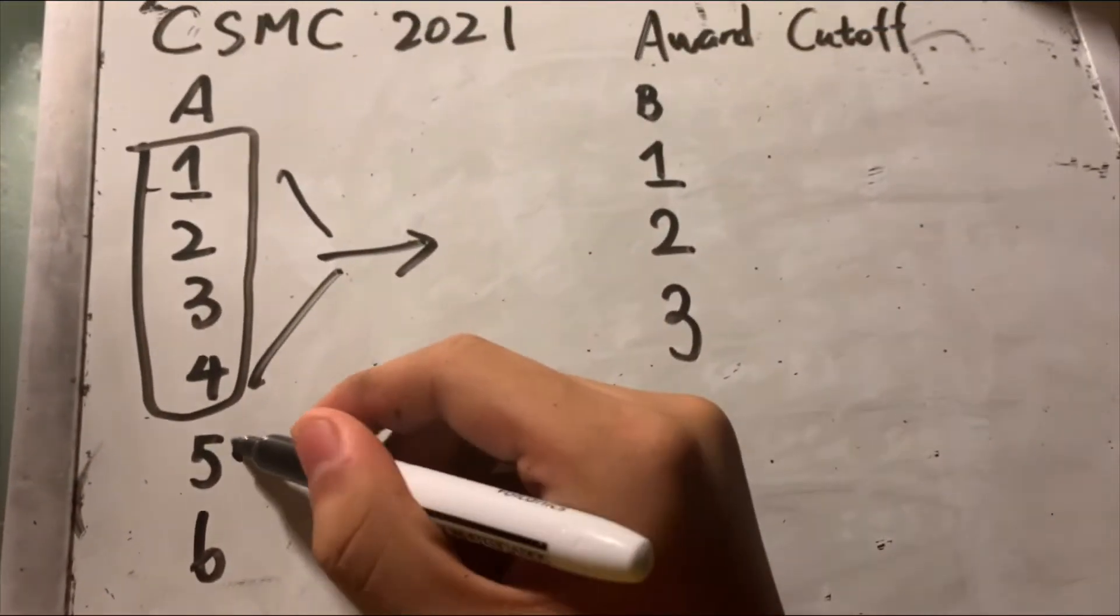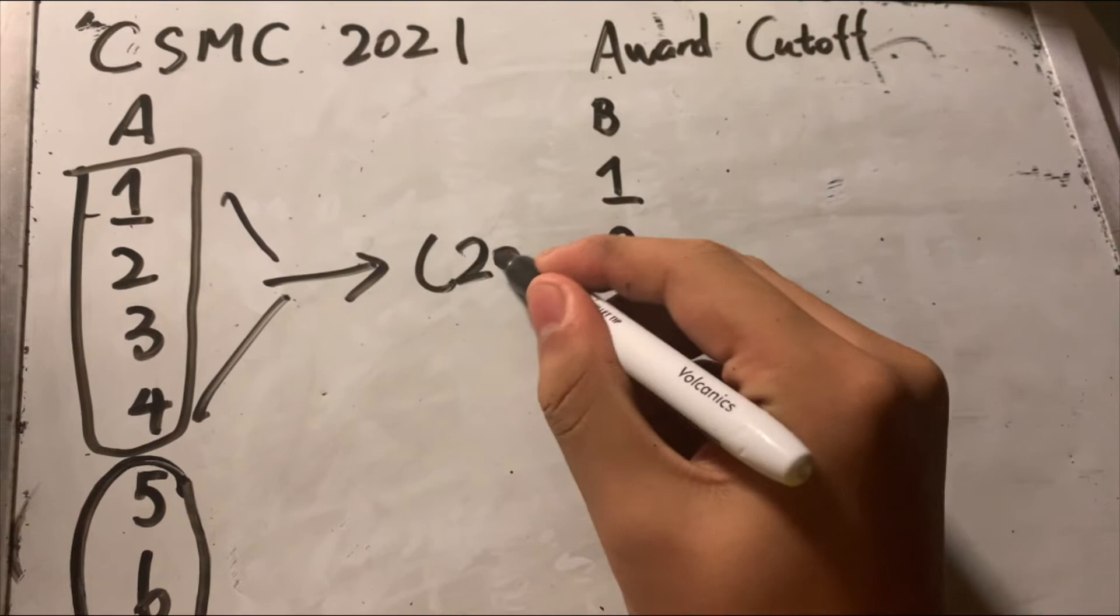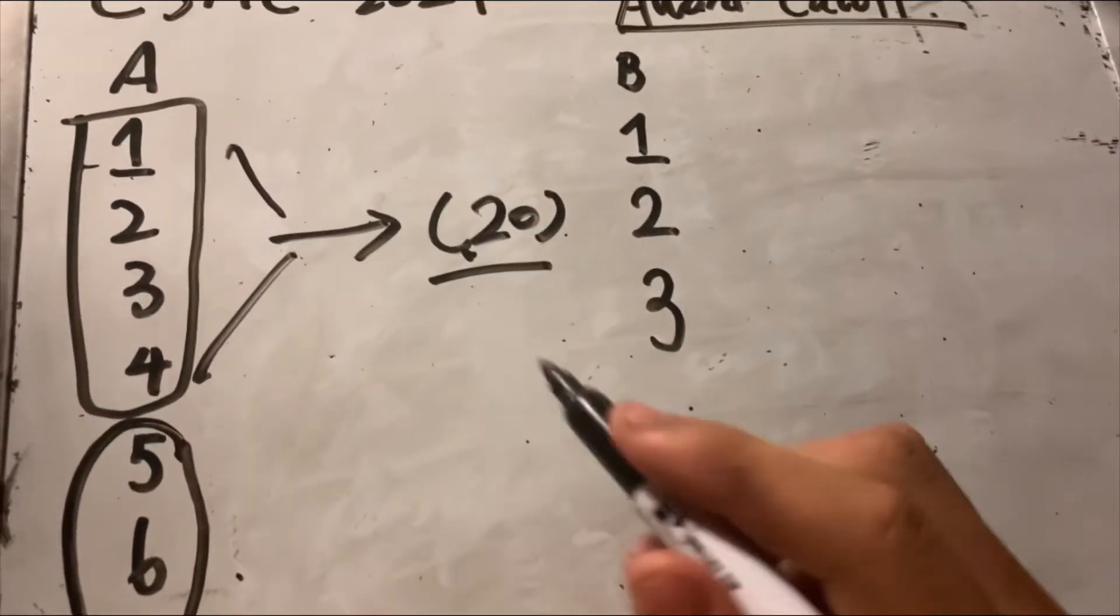The thing that is going to factor in a lot is problems 5 and 6. So this part we can assume that the people who got an award got a 20. Let's use this.